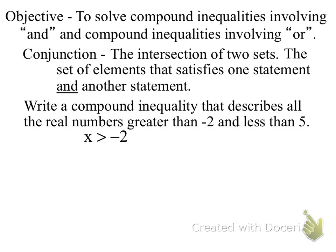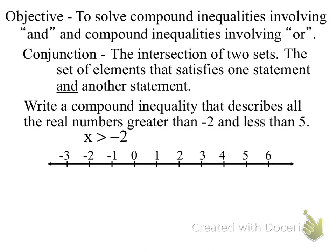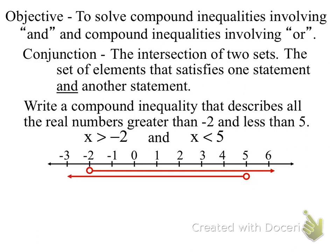Here's an example: x is greater than negative 2, and less than 5. I can write this in two ways: x is greater than negative 2, and x is less than 5. When talking about the intersection, I'm really only looking at the area where they overlap — that area in between those two open spots.